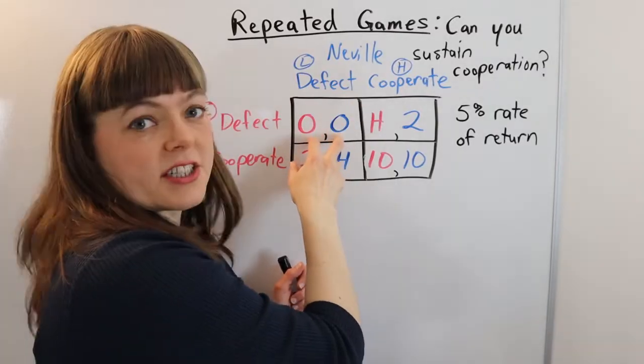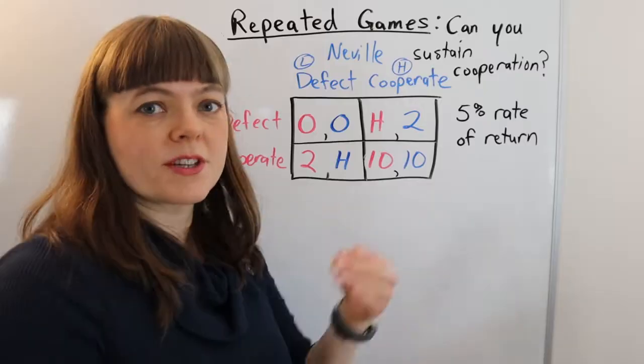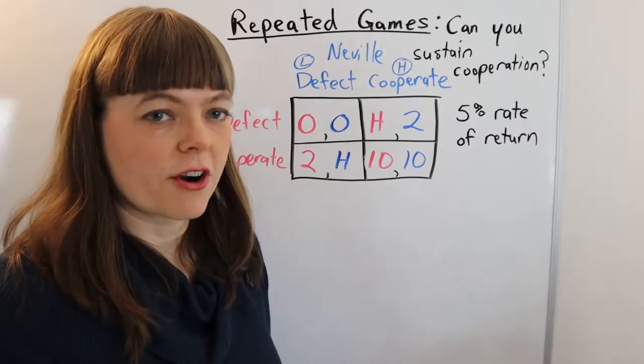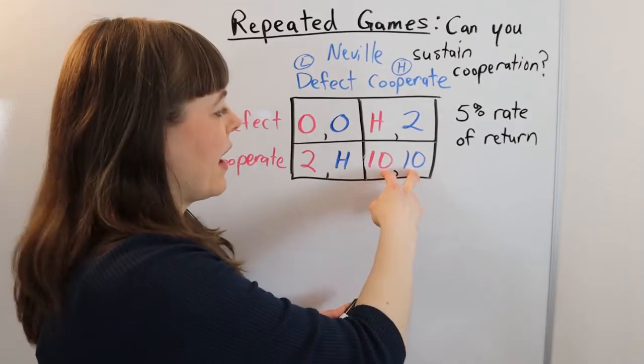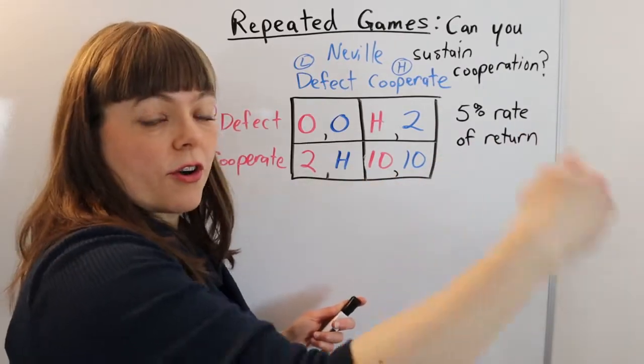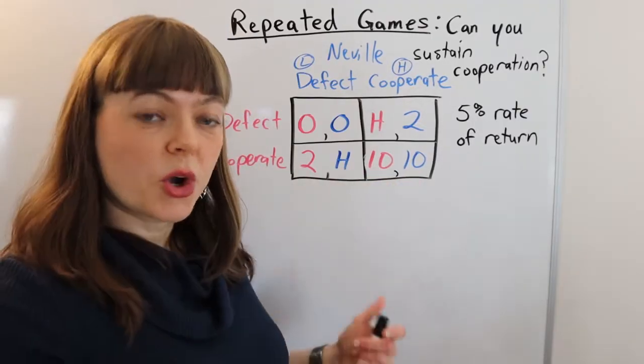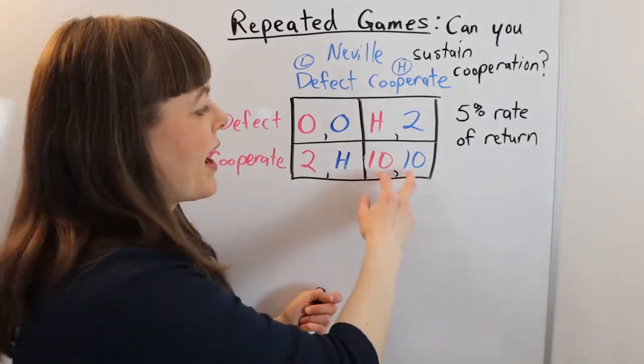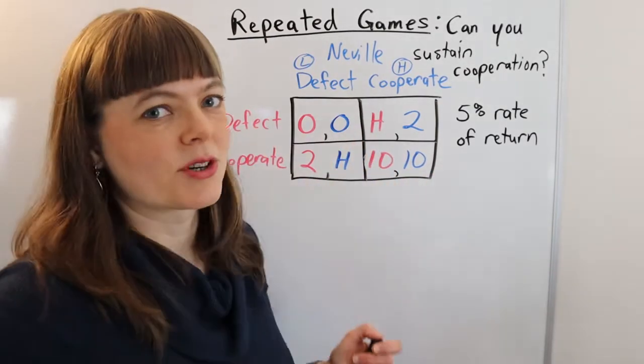So this might be the Nash equilibrium if we only play it once. But of course, if you are going to repeat this over and over, that long-standing relationship, the possibility that you could get the cooperative outcome over and over and over potentially infinitely into the future, that means that you could get a scenario where you can actually sustain cooperation even if you're playing a prisoner's dilemma.